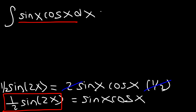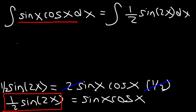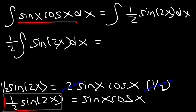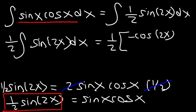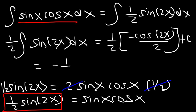So we're going to replace sine x cosine x with this expression. Now we have the integral of one-half sine 2x dx. Moving the constant to the front — the antiderivative of sine is negative cosine, the angle stays the same as 2x, and we divide by the derivative of the angle, which is 2, then plus C. So the answer is negative one-fourth cosine 2x plus C.